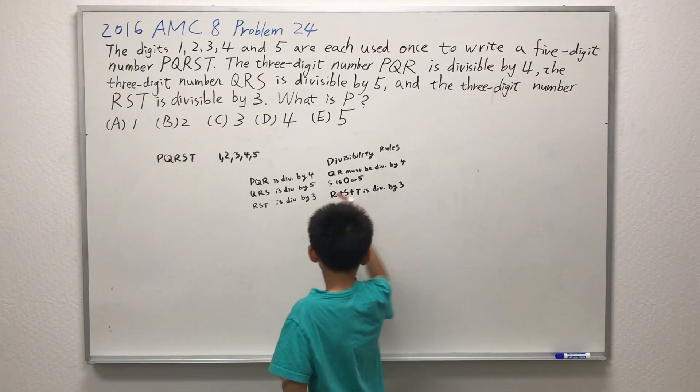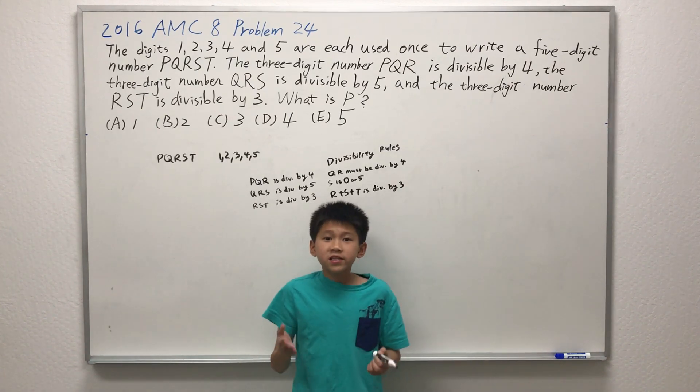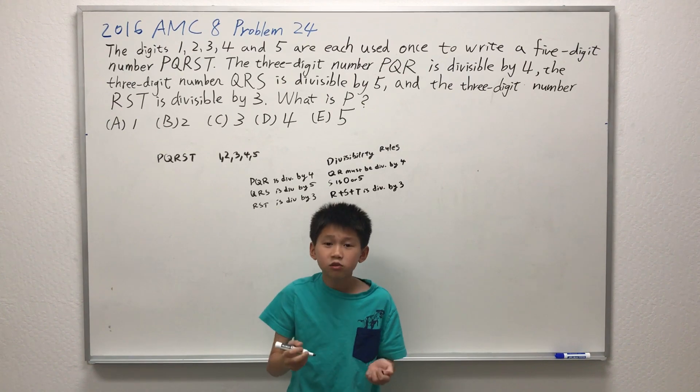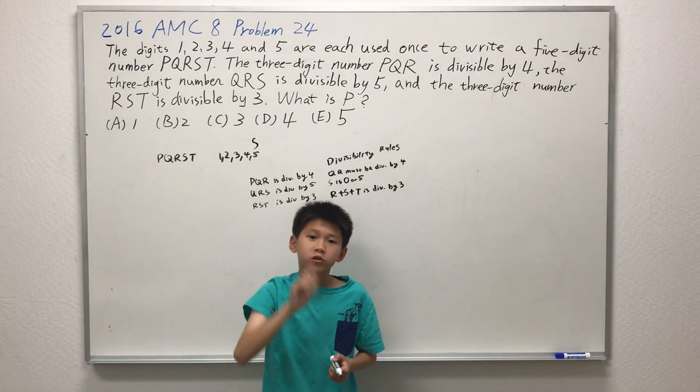So let's move on to the second criteria, where S is either 0 or 5. Since 0 is not one of the choices up here, that means S has to equal 5. So we've got one variable, 4 more to go.